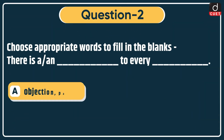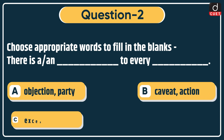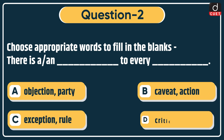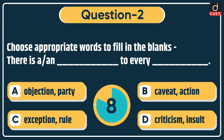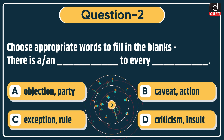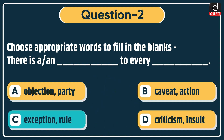Next question: choose appropriate words to fit in the blanks. 'There is a dash to every dash.' Options: Objection/Party, Caveat/Action, Exception/Rule, or Criticism/Insert. The correct answer is option C: Exception, Rule.